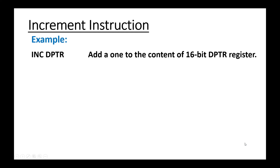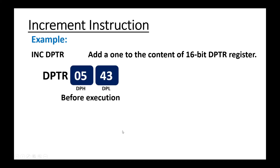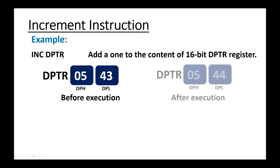INC DPTR adds one to the content of the 16-bit DPTR register. We know DPTR is a 16-bit register like the program counter PC, and DPTR can be separately accessed as 8-bit registers via DPH and DPL. Before execution, DPTR is having 05 in DPH and 43 in DPL, so the content of DPTR is 0543. When you execute this instruction the content will become 0544.